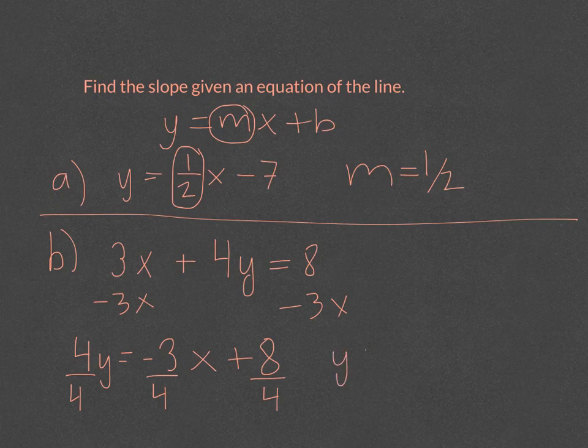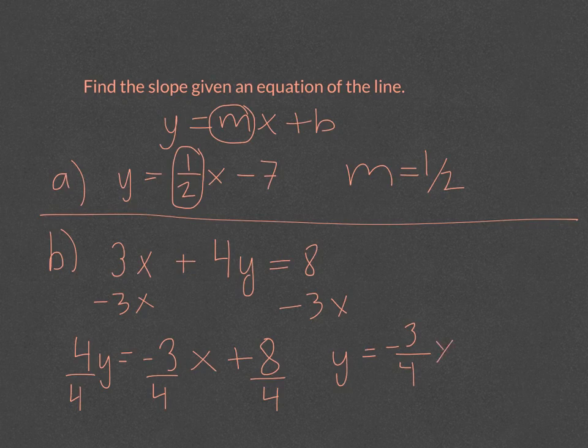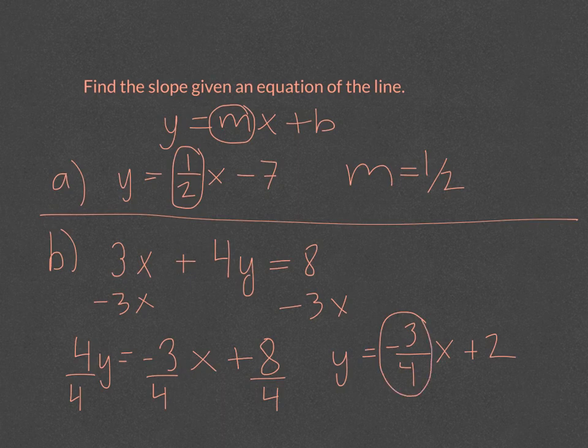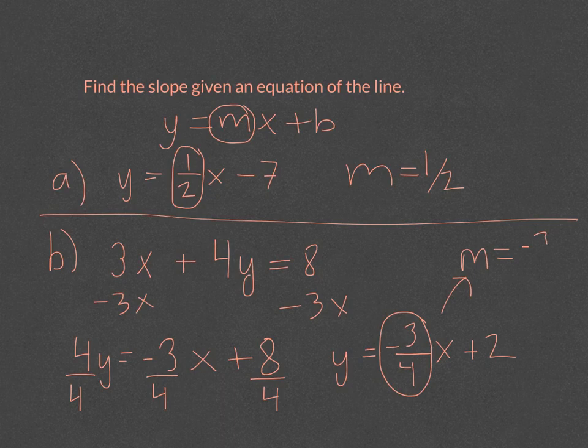We get our equation of the line in the y equals mx plus b form, and we can find the slope of our line by just finding the value that is on the x. So our slope would be negative three-fourths.